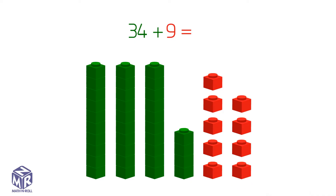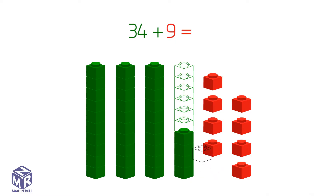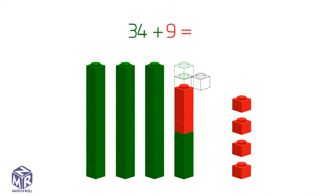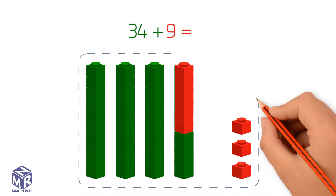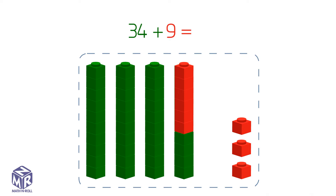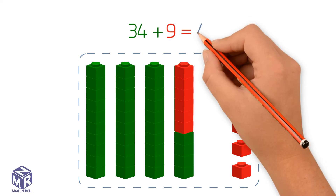What can we add to 4 to make a 10? 6. We break apart 9 into 6 and 3, and we give 6 to the 4 to make a 10. Now we have four 10s and three 1s. So 34 plus 9 equals 43.